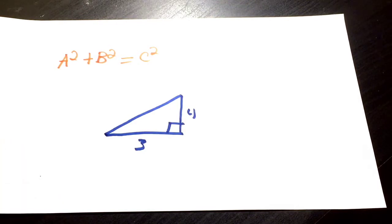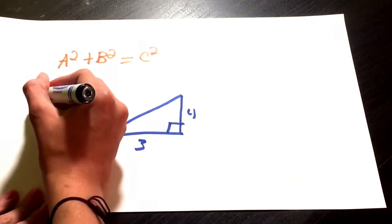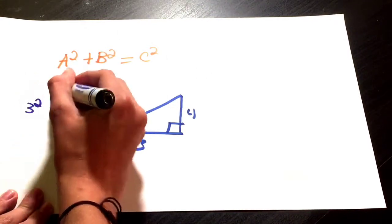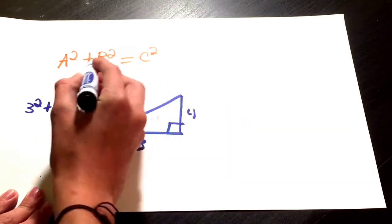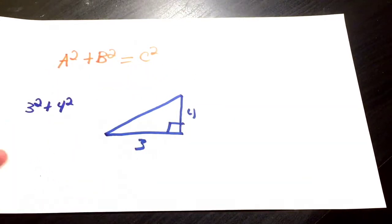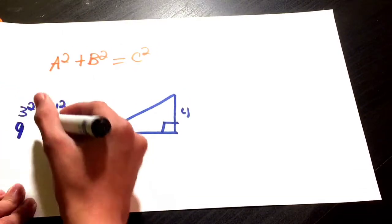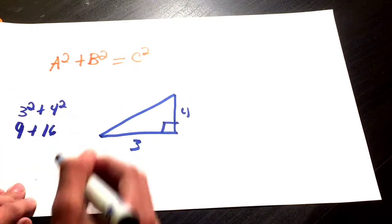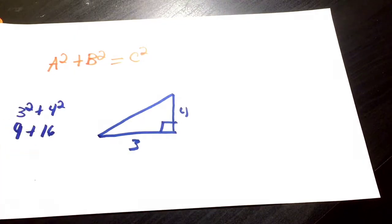But let's plug these numbers in. We'll do A for 3, so 3 squared, plus and we'll substitute the B for 4, so 4 squared. So we're going to do 3 squared which is 9, and 4 squared which is 16.